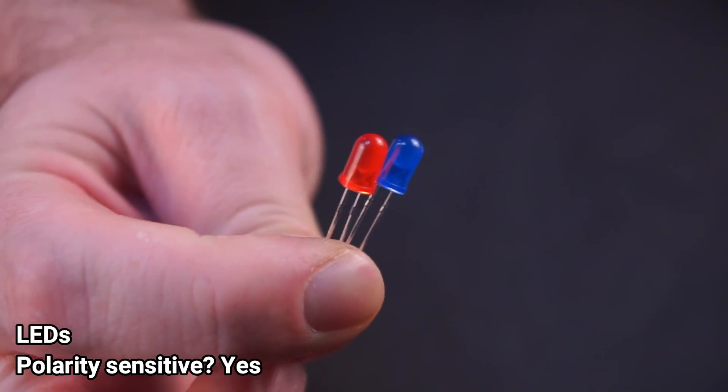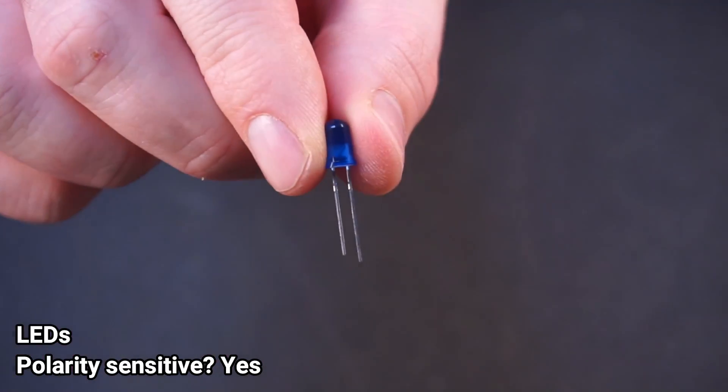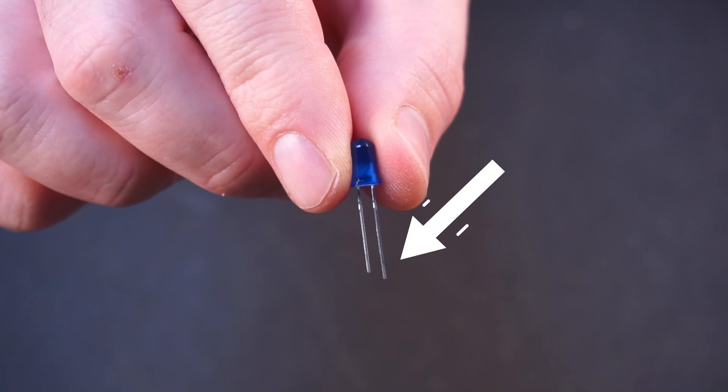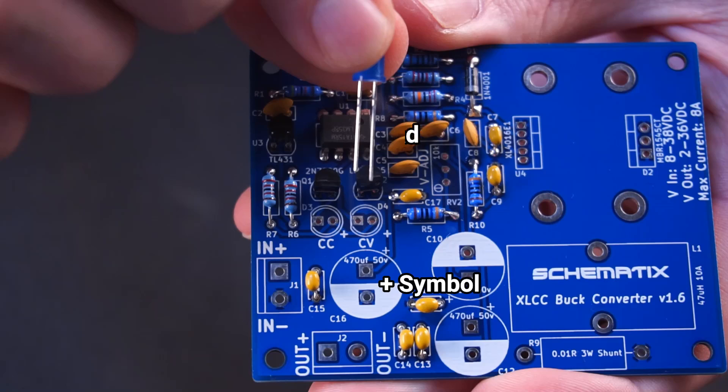Up next is the red and blue LEDs. Each LED has one wire that is slightly longer than the other. This wire should be installed in the hole nearest the positive symbol for each LED.